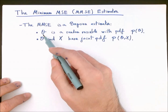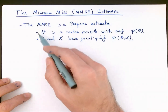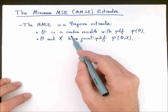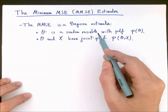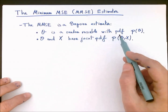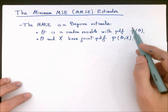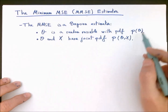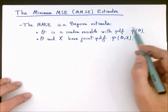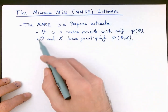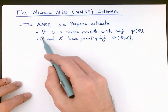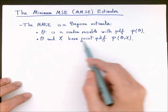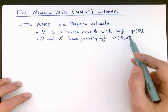The main characteristic of Bayesian estimation is that the unknown parameter z is assumed to have a random nature, and therefore it is modeled as a random variable that has a prior probability density function, here denoted with p. Since we have a probabilistic description of the unknown quantity, we can also obtain a full probabilistic description of both the unknown variable z and the data x, for instance by means of a joint pdf p of z and x.